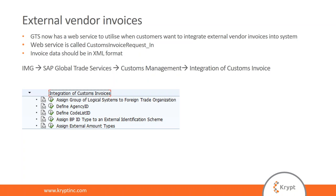A flexible approach is needed, and with that in mind there's some additional configuration that needs to be performed. In these customizing tasks accessible from the menu, you can map your partner IDs and roles to GTS, map external value types to GTS duty types, and then incorporate these into the invoice created in GTS.